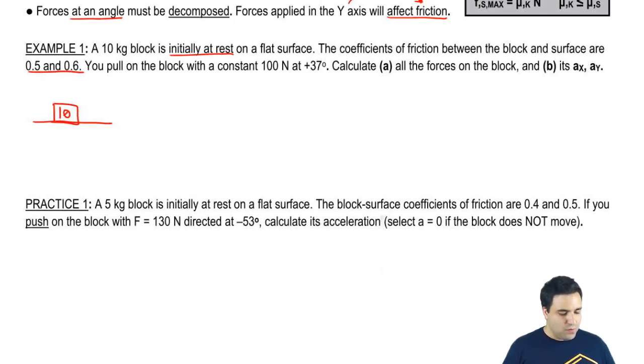You pull on the block with 100 newtons, so I'm going to draw it like this. F equals 100 at positive 37 degrees. Calculate all the forces in the block, and then calculate the block's ax and ay.